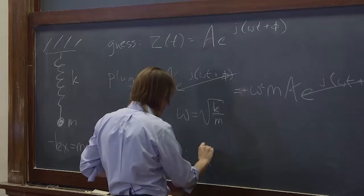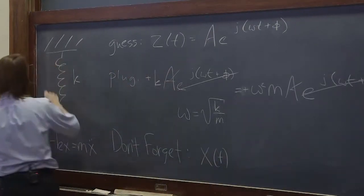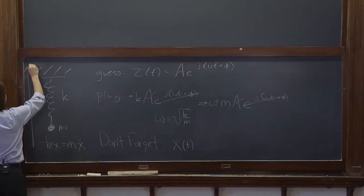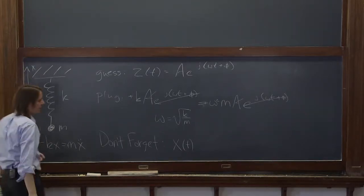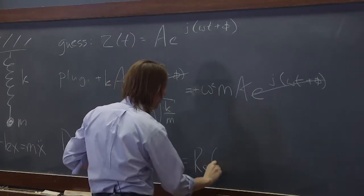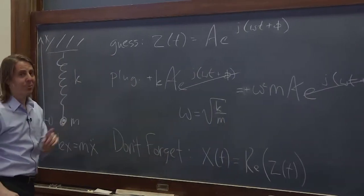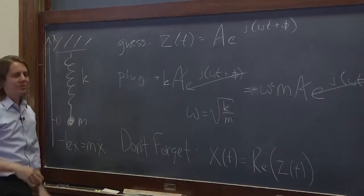Technically, at the end of any kind of a problem like this, you want to solve for the x position, assuming we're doing this on the x-axis from the origin. You want to get the x position, and that's always the real part of whatever complex thing you just came up with. So z is the complex solution. It's not the real world solution.